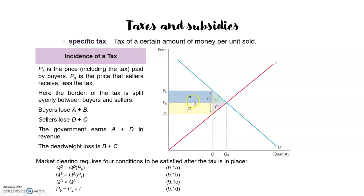The government earns areas A and D as tax revenue, because A and D together equal the rectangle of t (the tax) multiplied by Q1 (the quantity exchanged). The deadweight loss is areas B and C, because neither the consumer, nor the producer, nor the government receives these areas — they represent a loss in welfare for society as a whole. The total change in welfare is: minus A minus B minus D minus C plus A plus D, which equals minus B minus C.